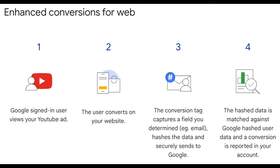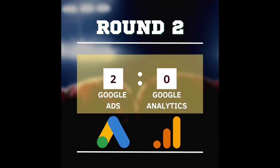Google does this by matching up user-provided data like emails and phone numbers with Google account data. Because this can help you get more efficacy out of things like smart bidding, the point here goes to the Google Ads tag as well.